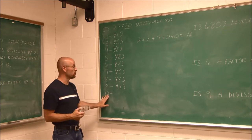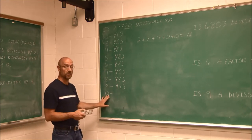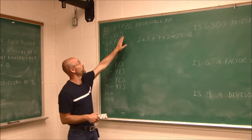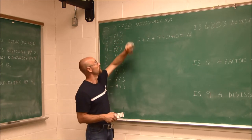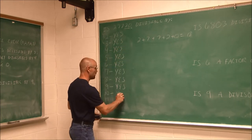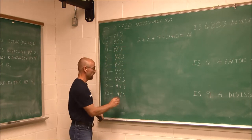10 was a very simple rule: if the number ends in 0, it is divisible by 10. The number ends in 0, so yes, it is divisible by 10.